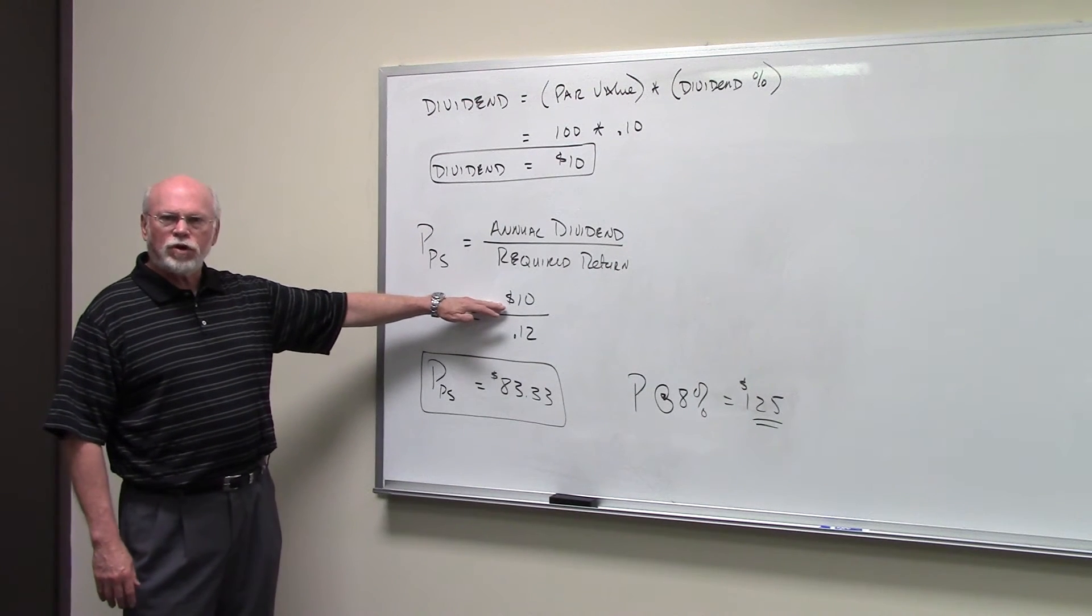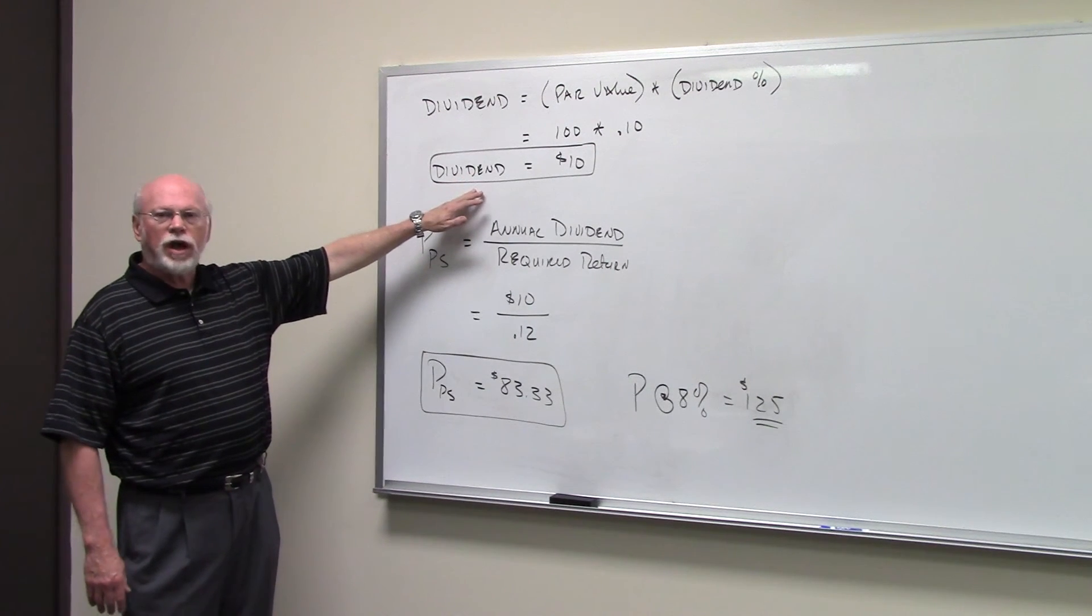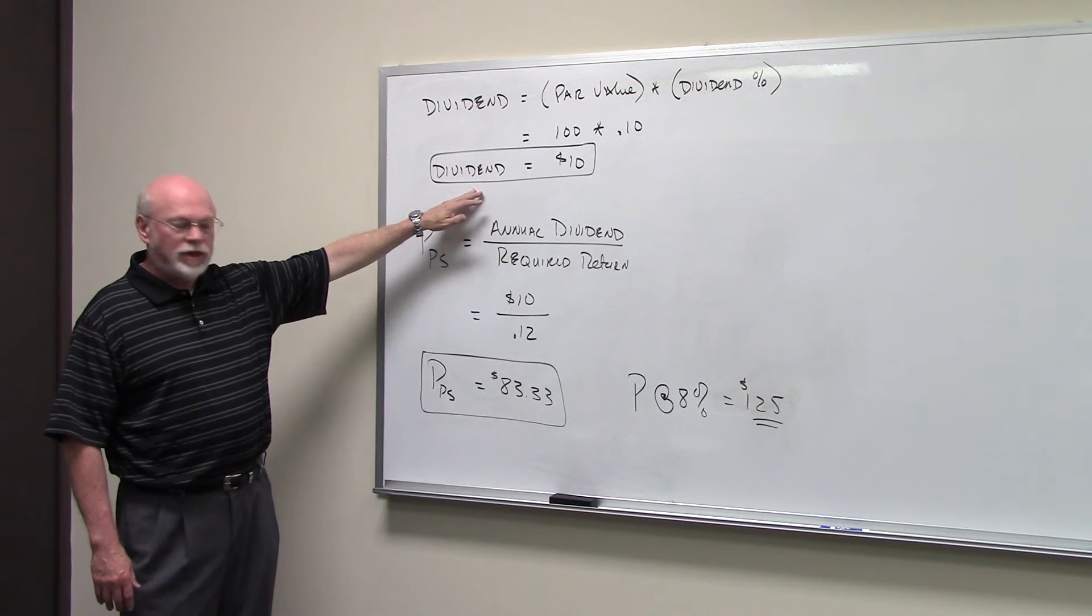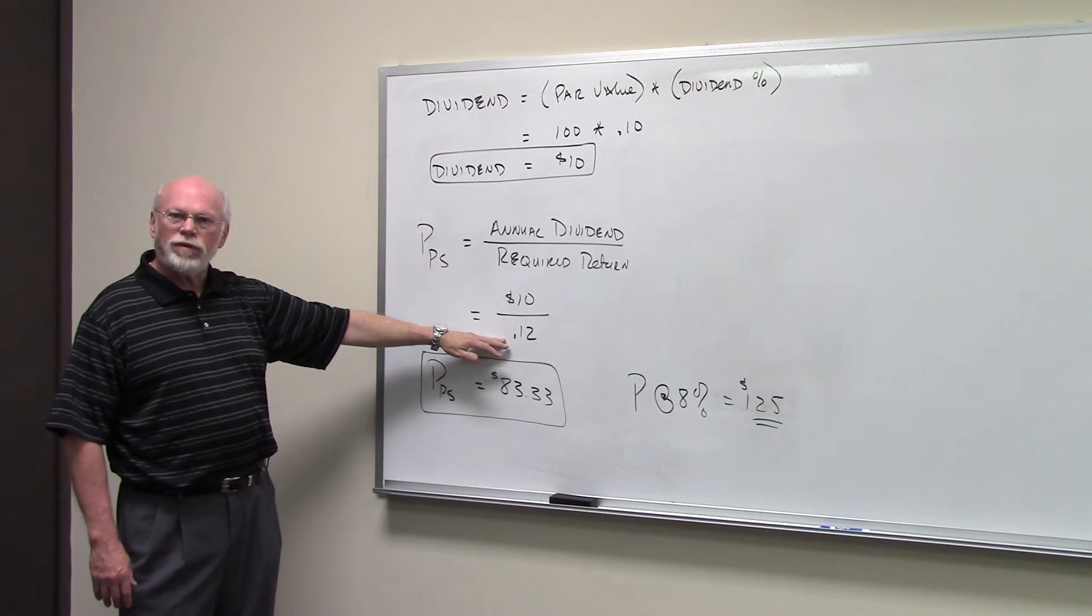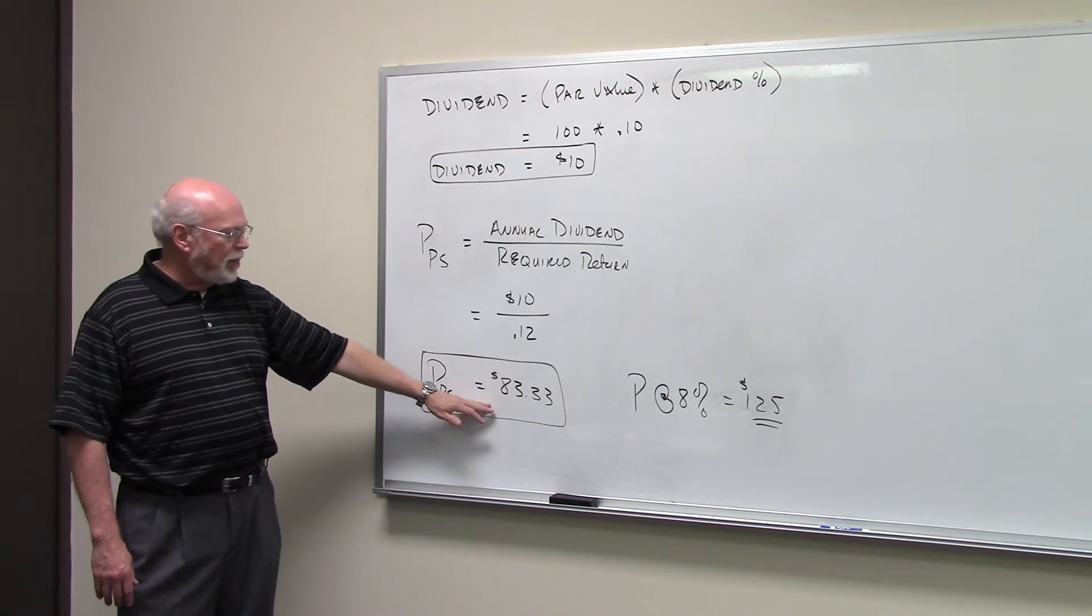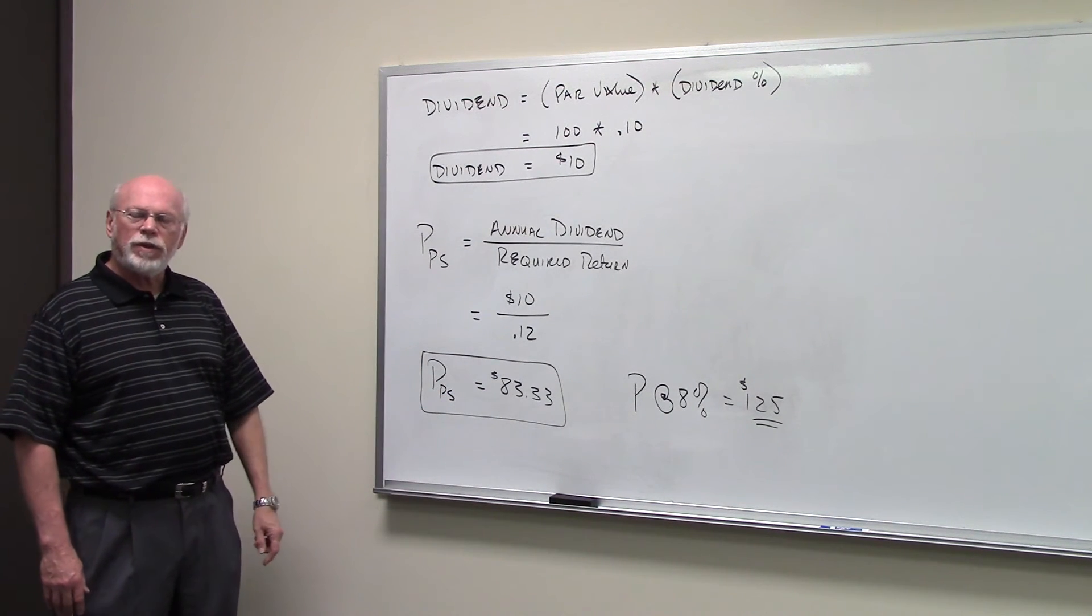Now this is a 10% preferred stock. 10% of $100 par value gives you the dividend. But now we require a 12% return - the decimal equivalent is 0.12. That means if the interest rates went from 8% to 12%, the value of the stock will go to $83.33.